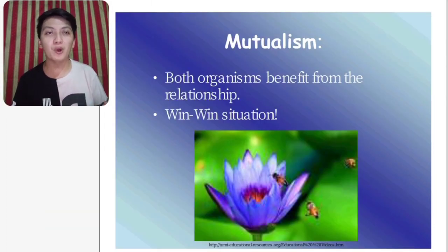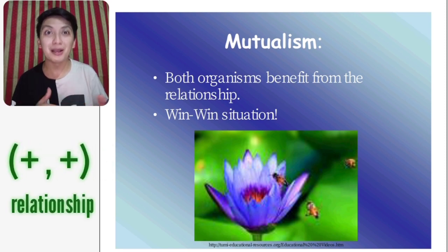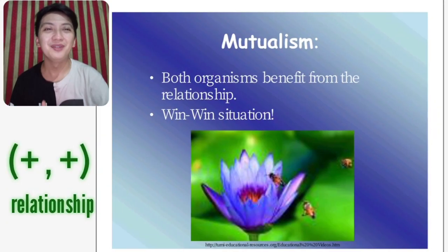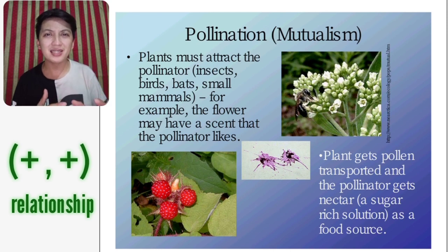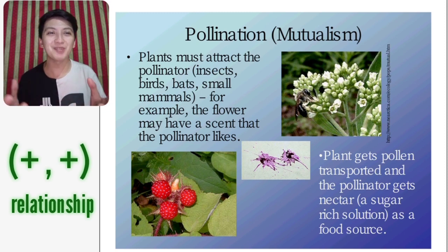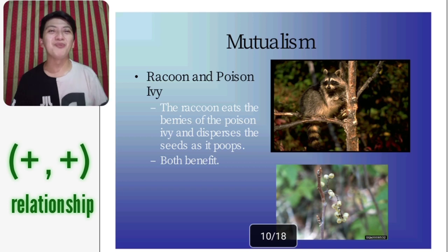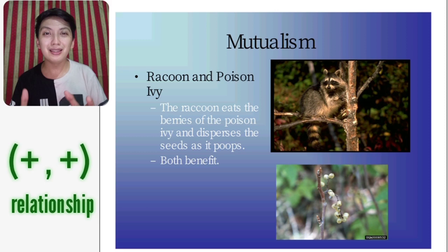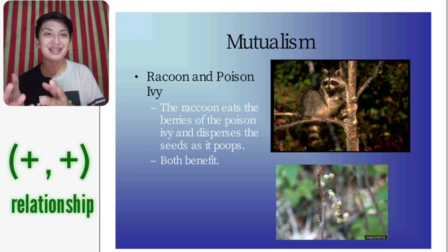Let's start with mutualism — both organisms benefit from the relationship. It's like a win-win situation, like the bee and the flower, a positive-positive relationship. Under mutualism, we have pollination. Plants reproduce through pollination and must attract pollinators like insects, birds, bats, and small mammals — for example, a flower may have a scent that pollinators like. Plants get their pollen transported and the pollinator gets nectar, a sugar-rich solution, as a food source. Another example is the raccoon and poison ivy — a raccoon eats the berries of the poison ivy and disperses the seeds as it defecates. Both benefit: one gets food, the other gets reproduction.